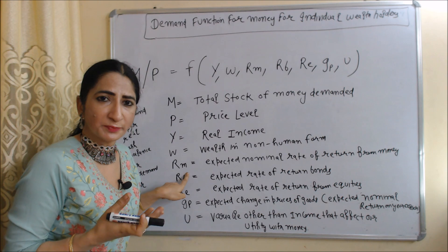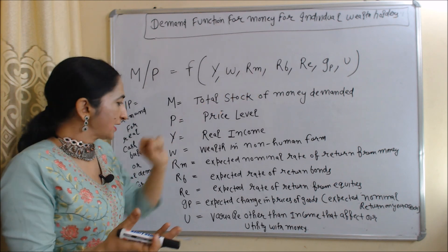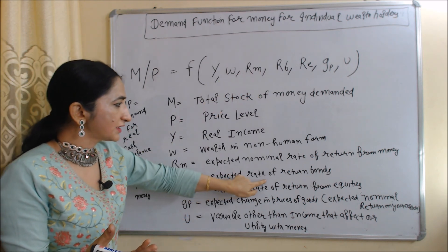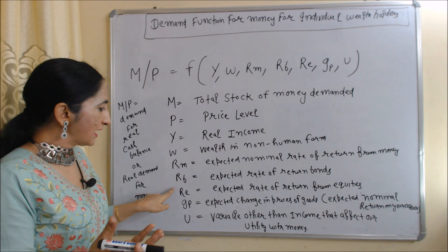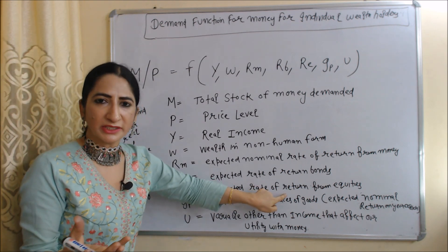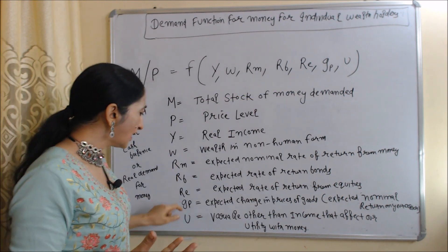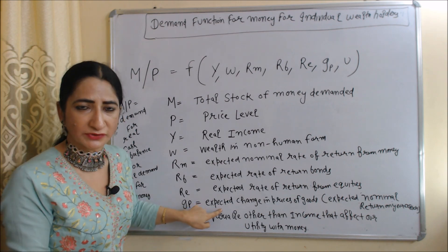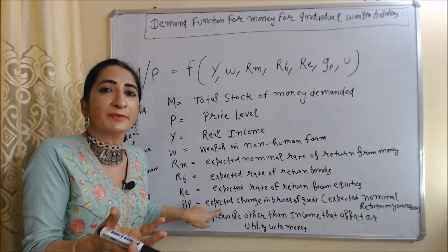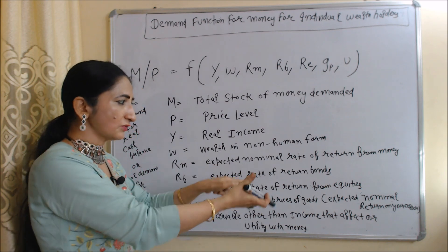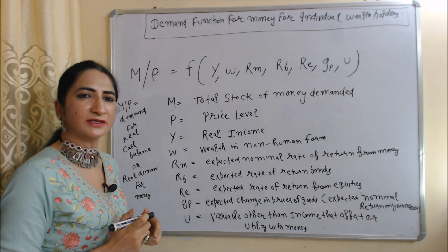Rm is the expected nominal rate of return from money — how much profit we expect from money we invest. Rb is the expected rate of return from bonds — how much interest rate you expect from bonds. Re means expected rate of return from equity — how much dividend you expect from your shares. Gp means expected change in prices of goods, so that you can know the expected nominal return on your asset, such as how much your property price will increase in future. U is a variable other than income that affects your utility with money.